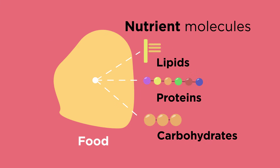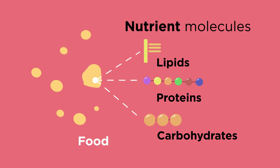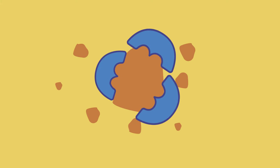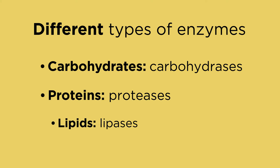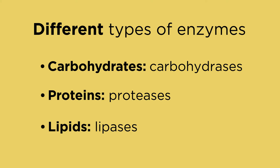The large molecules which make up our food — like lipids, proteins, and carbohydrates — are too big to be moved into our blood. So they need to be digested into smaller molecules by physical processes like chewing, and chemically by special proteins called enzymes. Different types of enzymes digest the different types of food, so let's look at the food groups in turn.